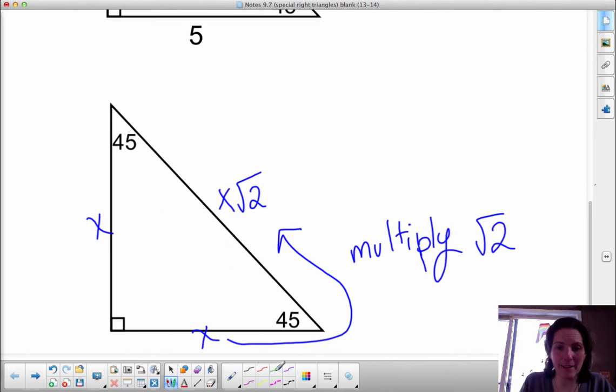And if you're going the other way, that you have the hypotenuse, and you're trying to get a leg, that's when you're going to divide by the square root of two.